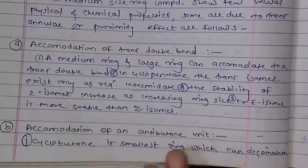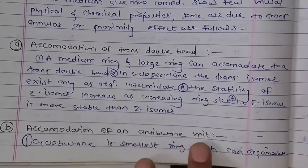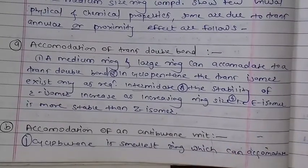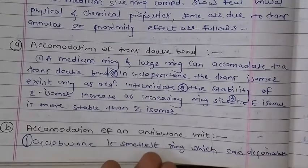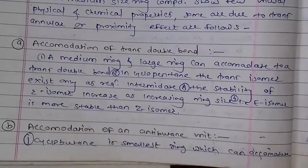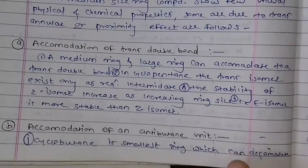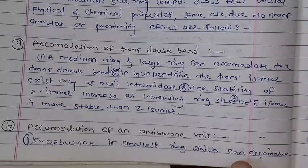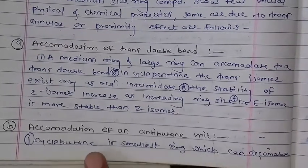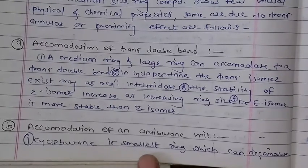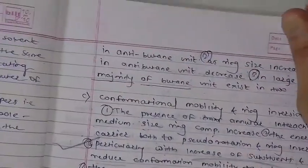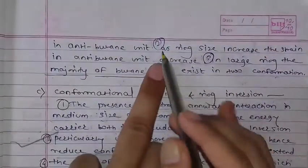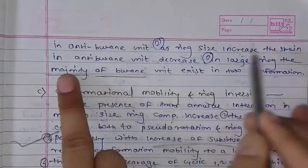Second point to write down: the account of the anti-butane unit. The cyclobutane is the smallest ring. With ring strain present, the strain is affected. The cyclopentene ring, which is the smallest ring, can accommodate anti-butane units. When you increase the ring size, the strain is decreased.